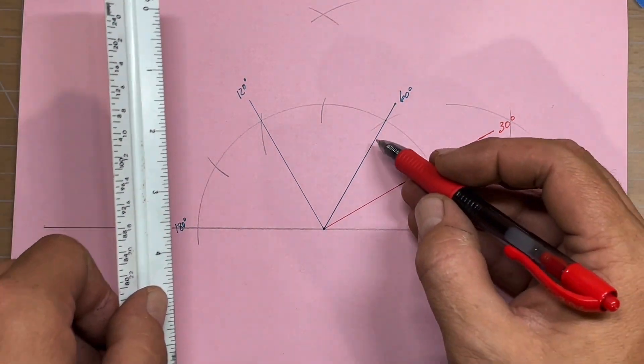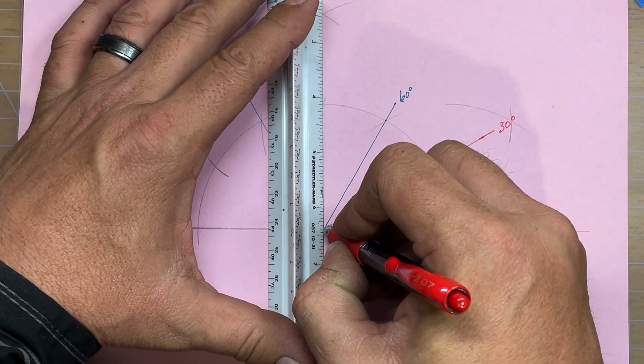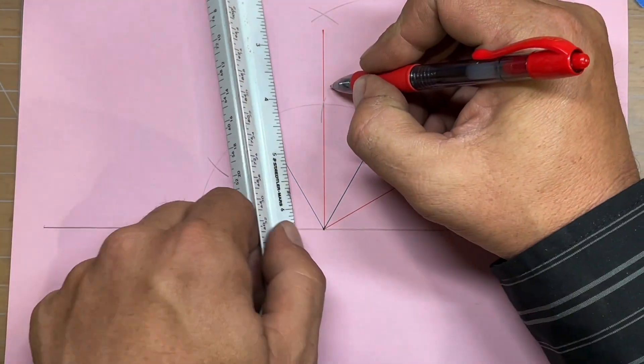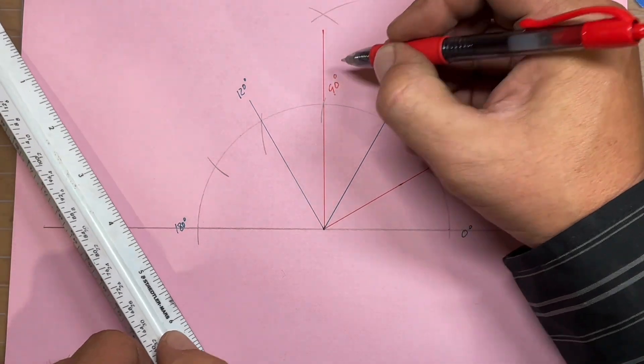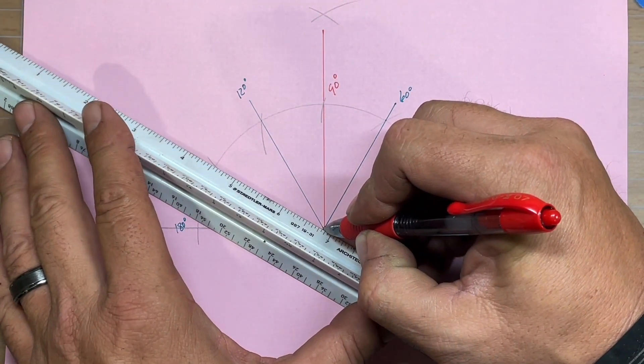So this is 30, that's 60, this will be 90. This is 90 degrees, and this will be 150 degrees.